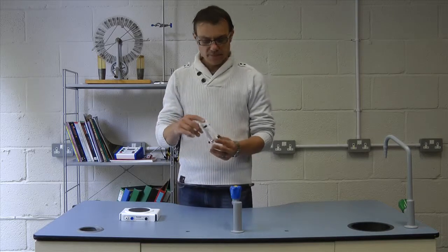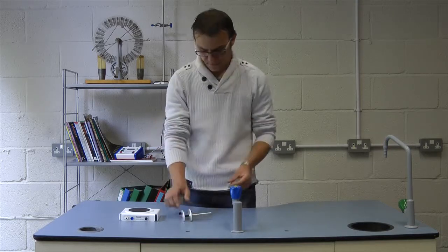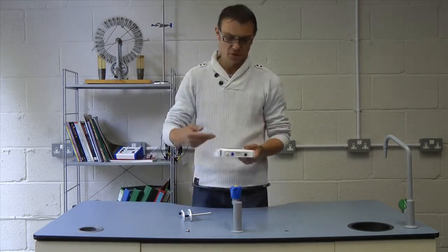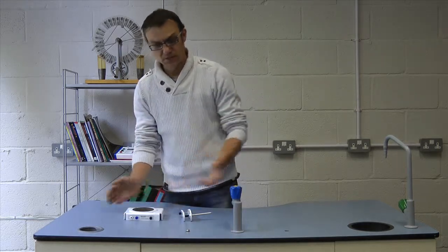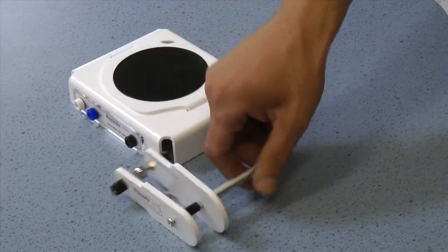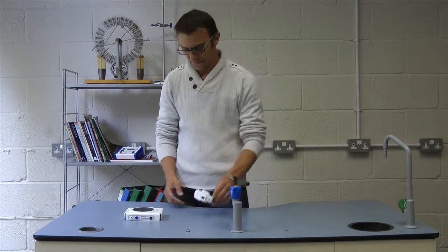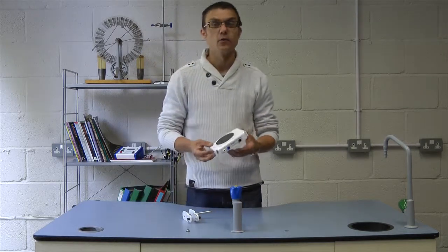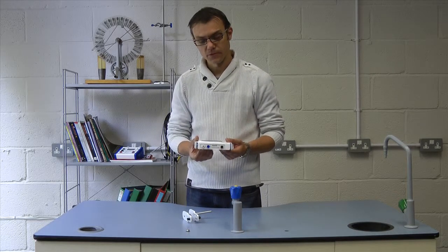There is a release unit here which drops the ball bearing, which is also supplied, and you get a trapdoor unit for catching the ball at the bottom of its fall. Both of these are simple switches. This one breaks a circuit as soon as it's released and drops the ball bearing. This one will either break or make a circuit depending on what you choose when the ball bearing drops and triggers the trapdoor.